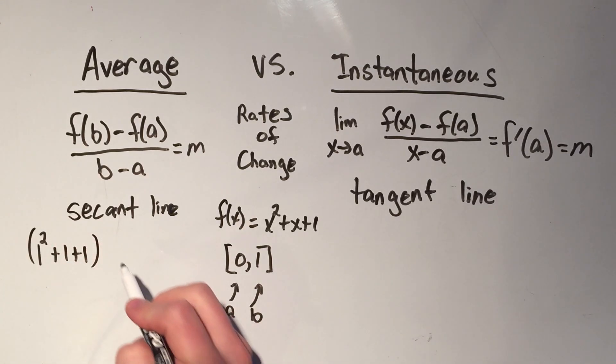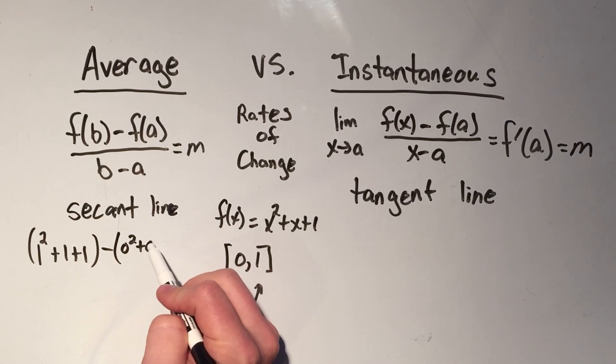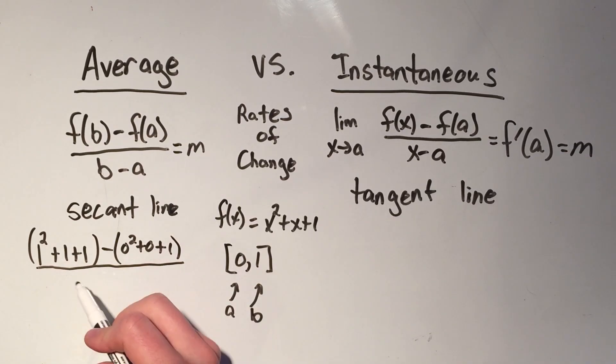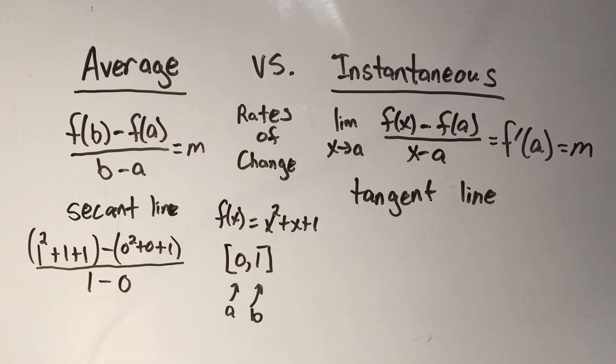That's f of b minus f of a, that's plugging zero into that function, so that's zero squared plus zero plus one, all over b minus a. I picked the numbers to work out easily.